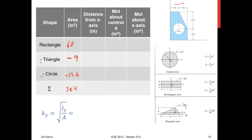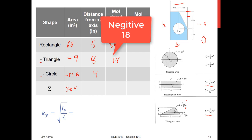Distance from the x-axis: the centroid of the 10-inch-tall rectangle is at 5 inches. The triangle's centroid is one-third from the taller edge — that's 2 inches from the top, so at 8 inches. The circle is 4 inches up. Moment of inertia about the centroid from our tables: for the rectangle, (1/12) × base × height³ = 500. For the triangle, (1/36) × base × height³ = 18. For the circle, (π/4) r⁴ = 12.6.